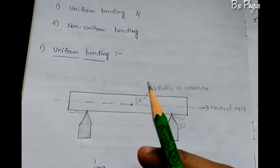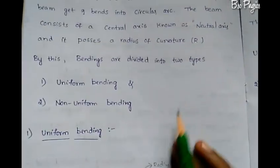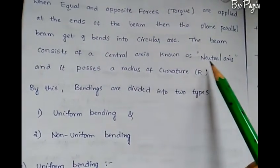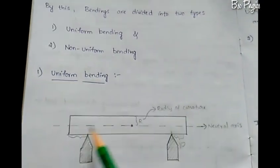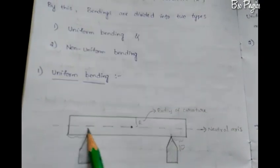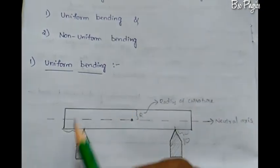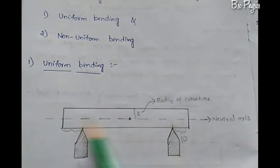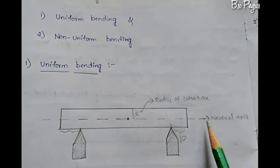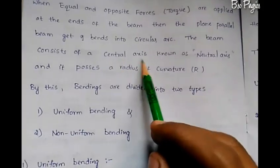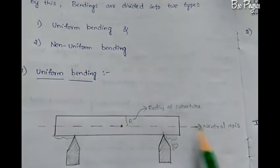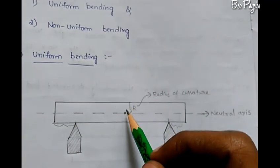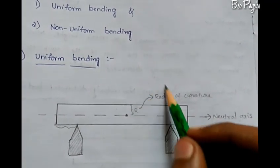Here you can see the neutral axis and radius of curvature. The beam consists of a central axis, known as the neutral axis — this is the middle line of the beam. The distance R shown here is the radius of curvature.